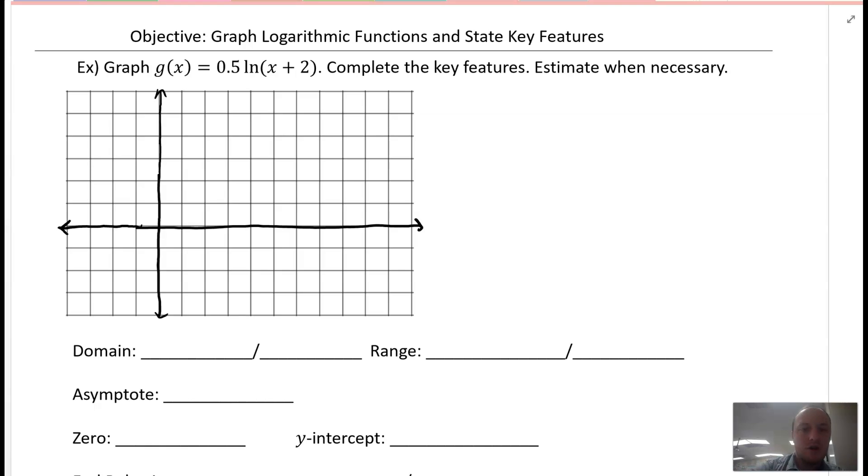So remember the parent function of a natural log - all logs have a zero at 1, and then their next point is based upon the base. In this case it's log base e, so I have to go over e which is 2.7 and then I'll go up 1. Then the next point is e squared, which will give us 2, so e squared is about 7.4. Okay, and that would give us that point. So those are our parent function points.